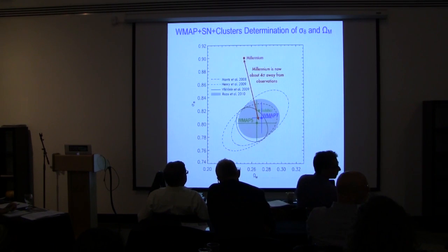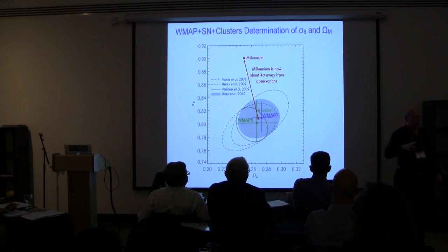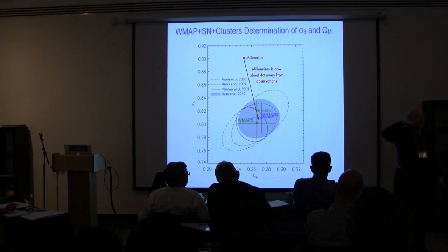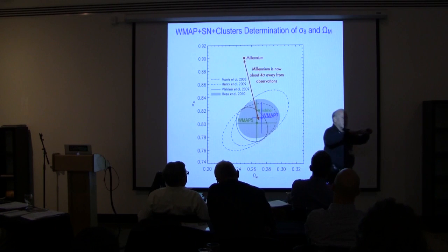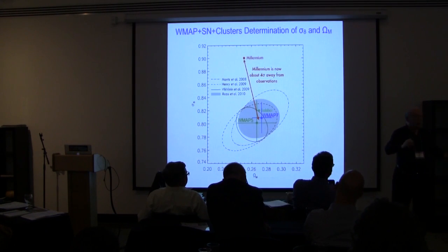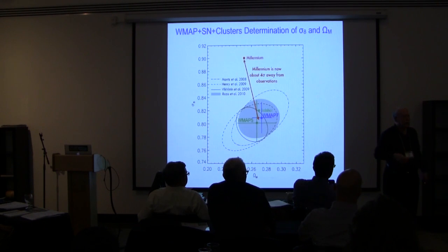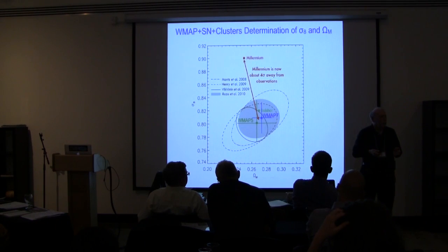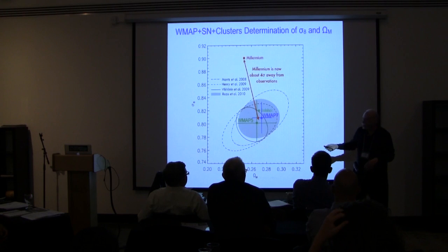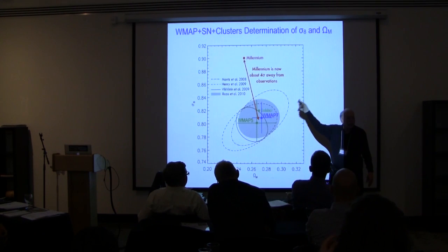Can you explain what sigma actually is? One sigma means there's about a 68% chance statistically that the truth is within that circle. Two sigma, you're 95%. Three sigma, you're 99 point something percent. The point is: Millennium is wrong. There's simply no question — it's just wrong.